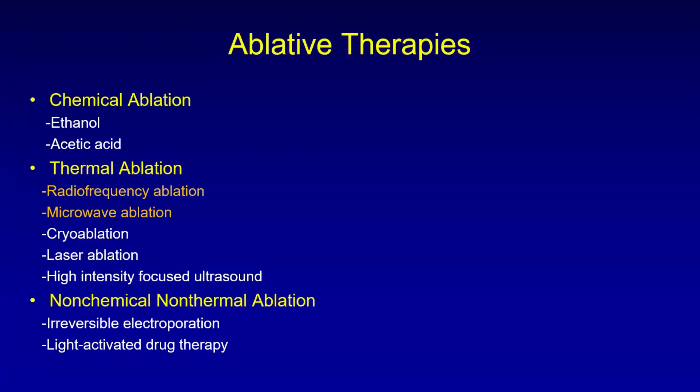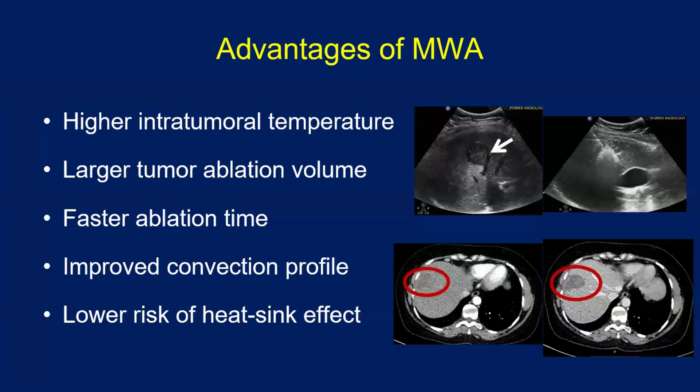There is a long list of ablative therapies. The most commonly used thermal ablations are radiofrequency ablation and microwave ablation. The reasons we are switching to microwave ablation include achieving high intratumoral temperature, larger tumor ablation volume, faster ablation time, improved convection profile, and lower risk of heat sink effect. If there is a tumor close to a flowing blood vessel, the vessel can take away the heat of the ablation. With microwave ablation, this heat sink is much less and you can achieve a large area of ablation as seen in the CT scan images.